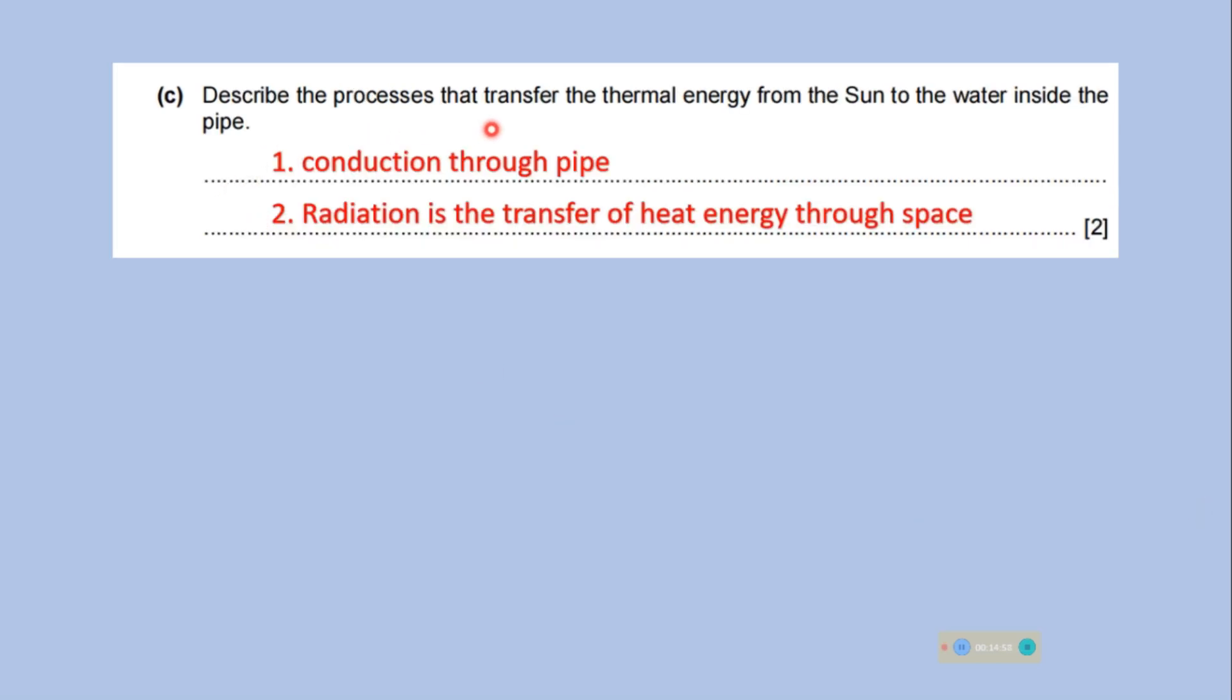Describe the process that transfer the thermal energy from the sun to the water inside the pipe. So, one of the process is conduction. Conduction through pipe. And the other one is the radiation. Radiation is the transfer of heat energy through space.